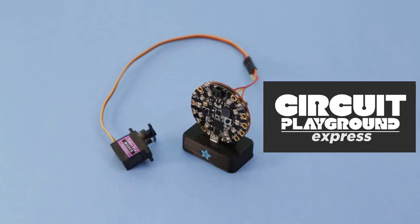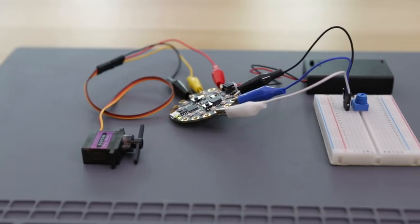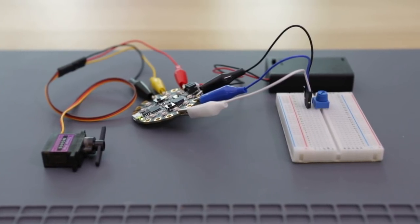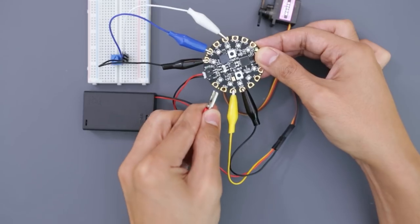This is a shield for the Circuit Playground Express that allows you to easily connect jumper cables. For breadboarding the Circuit Playground, you'll need some special alligator clips with jumper cables. It's nice because there's no need to solder so you can quickly start prototyping.